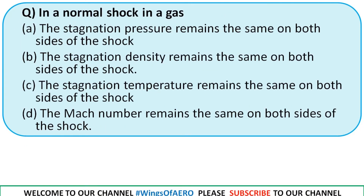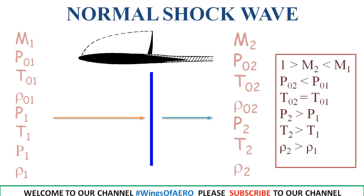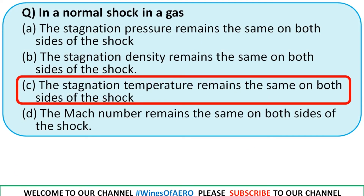In a normal shock in a gas, which remains the same on both sides — stagnation pressure, stagnation density, stagnation temperature, or Mach number? From the diagram, the stagnation temperature remains the same, while static pressure, static temperature, and static density all increase behind the shock wave. So the right answer is option C — stagnation temperature remains the same on both sides.